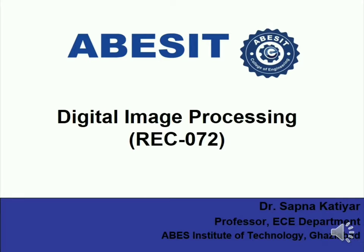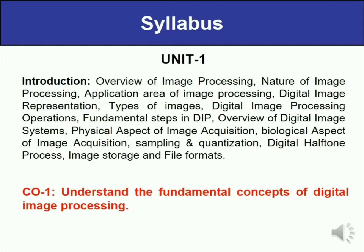Let us discuss the contents of all five units one by one. In the first unit, you will study about the introduction to digital image processing. It gives an overview of image types and fundamental steps in digital image processing. In this unit, you will also study the elements of a digital imaging system, followed by a discussion on physical and biological aspects of image acquisition. After the completion of unit one, you will be able to understand the fundamental concepts of digital image processing. This is the course outcome of unit one.